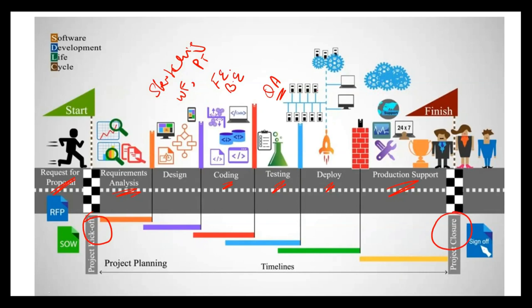So a very brief overview: idea generation, then ample research, then the design phase with sketching, wire framing, and prototypes. Then actual coding happens where we as developers step in — front end and back end — then quality assurance, deployment, and maintenance. Any doubts before moving ahead? If you have doubts, post them in the chat, or simply say no doubts and I'll move ahead.